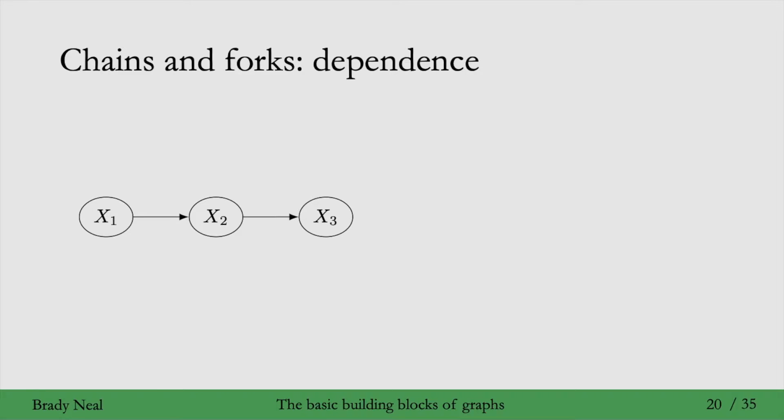We'll first talk about dependence in chains and forks. Here we have a chain, and we know that x1 and x2 are dependent simply because of minimality or the causal edges assumption. Same with x2 and x3, but what about x1 and x3?